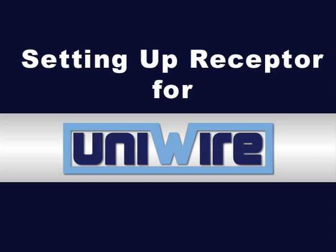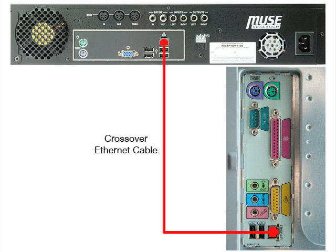If you haven't yet connected Receptor to your computer, you must do so before using UniWire. If you're connecting Receptor directly to your computer, plug one end of a crossover Ethernet cable into Receptor and the other end into your computer. Make sure that you use a crossover Ethernet cable and not a standard or straight-through cable.